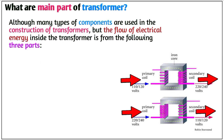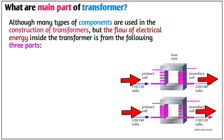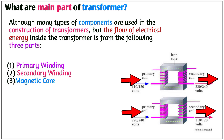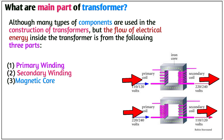What are the main parts of a transformer? Although many types of components are used to construct a transformer, the flow of electric energy inside the transformer involves the following three parts: Number 1, primary winding; Number 2, secondary winding; Number 3, magnetic core.